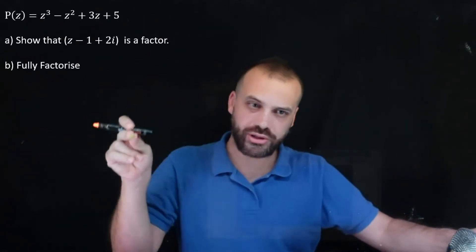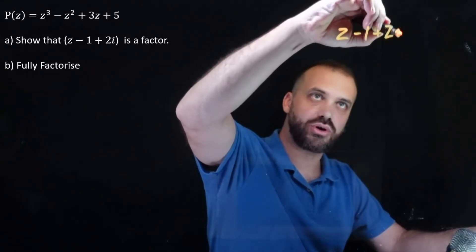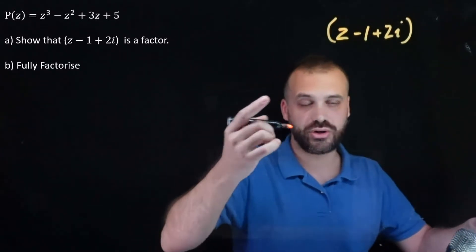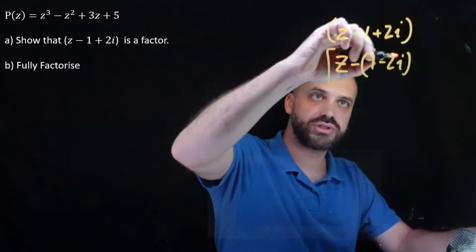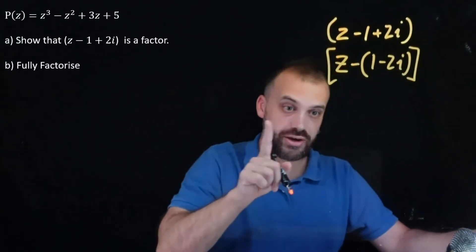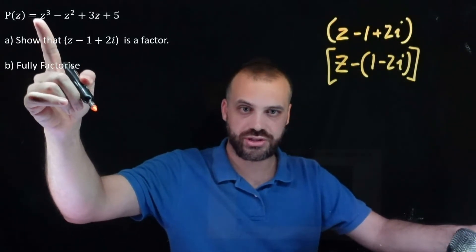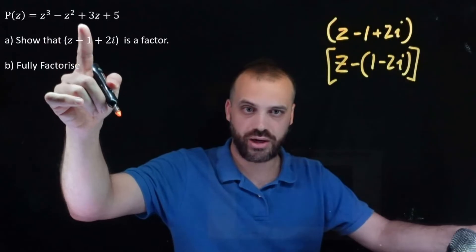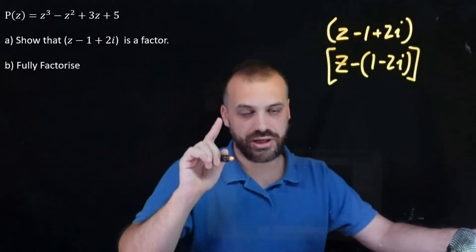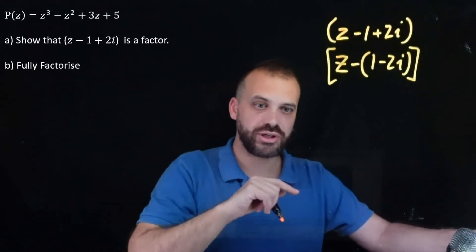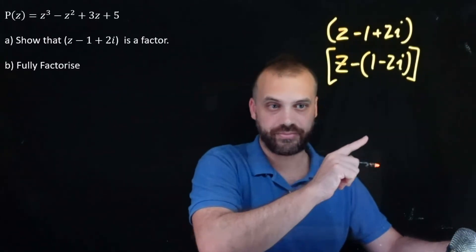Because z minus 1 minus 2i is a factor and is a solution, and because all of the coefficients — 1, negative 1, 3, and 5 — are real, that means if there is one complex solution, there is always another complex solution, and that complex solution is the conjugate of the first.